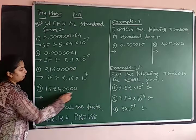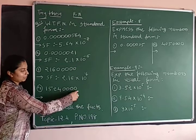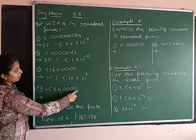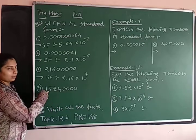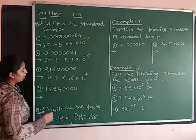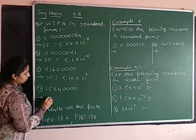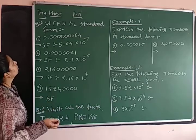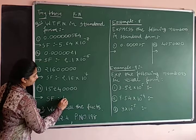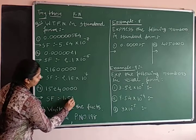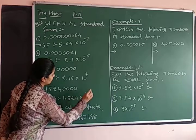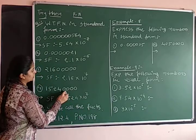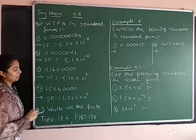Next. Here the point is moving 1, 2, 3, 4, 5, 6, 7. 7 steps to the left direction. So standard form: 1.524 into 10 raised to 7. 1, 2, 3, 4, 5, 6, 7 steps.